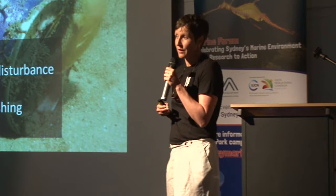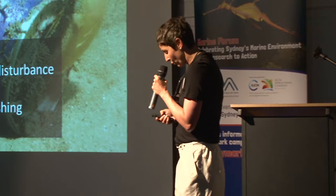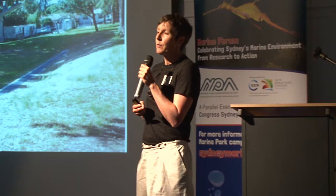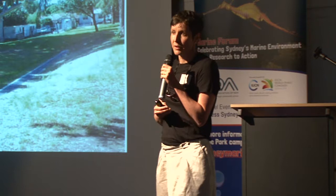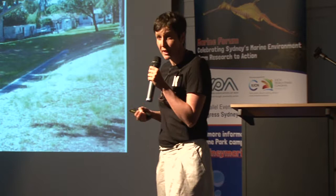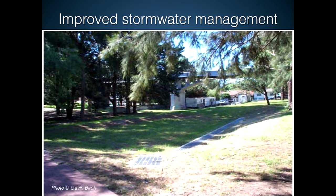What are we doing to combat some of those problems? Here's a very practical example: Gavin Birch has been working for many years on how to decrease the amount of pollutants that enter the harbour through stormwater. He's been working with councils on stormwater infiltration basins that run in parallel to stormwater canals, and they are reducing the amount of pollutants entering the harbour. Bondi actually has a system like this as well. That's a very practical application of research helping to reduce pollution impact on the harbour.